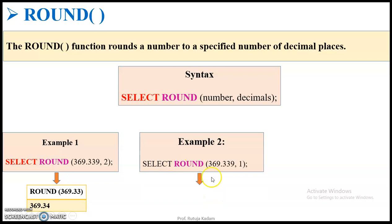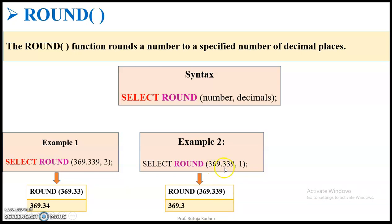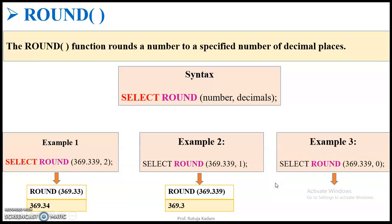In the second example, SELECT ROUND(369.339, 1) — we consider only one decimal place, giving 369.3. The next decimal digit is 3, which is less than 5, so it remains as is: the answer is 369.3. For SELECT ROUND(369.339, 0), zero decimal places means the output is the integer 369 with no decimal points considered.